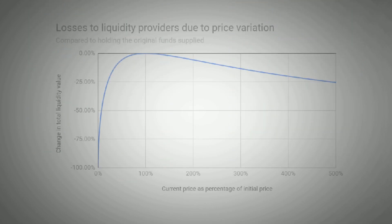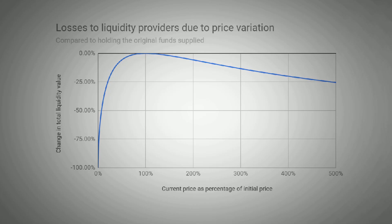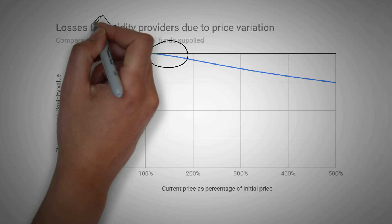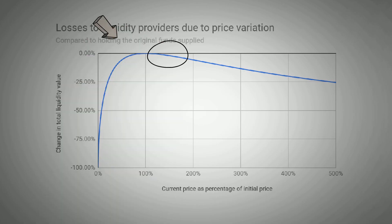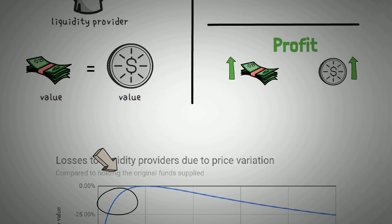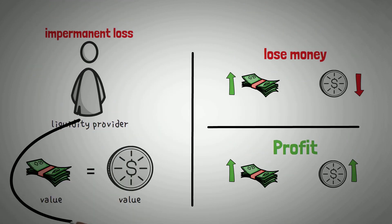Here is a neat little chart that you can look at to see how much impermanent loss a liquidity provider may experience in terms of how much that asset changes in price. As the price of an asset increases past 100% of its value to the other asset, the impermanent loss grows. And as the price of an asset decreases less than 100%, the impermanent loss also grows. So like I mentioned, we want the price to be about the same as when we invested — otherwise we start to experience impermanent loss.